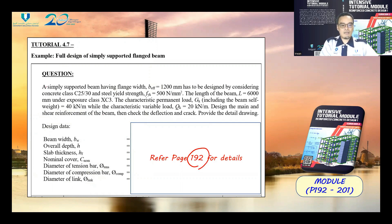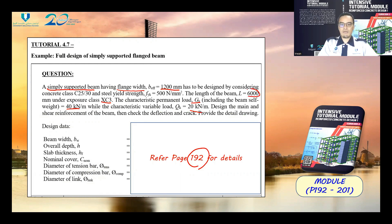This is a simply supported beam with a flange. The flange width is equal to the effective 6200 millimeters and the exposure class is XC3. The permanent load GK, including the beam self-weight, is equal to 40 kilo-Newton per meter and the characteristic variable load QK is equal to 20 kilo-Newton per meter. The total length of the beam is 6000 millimeters, or 6 meters.